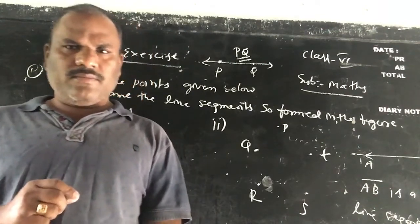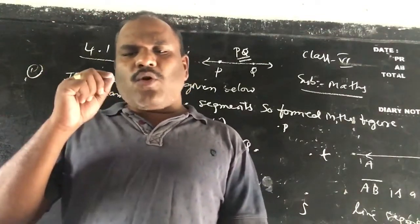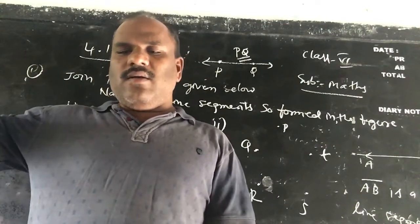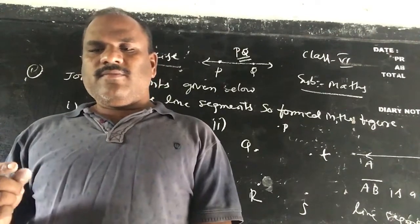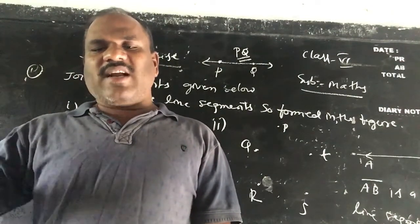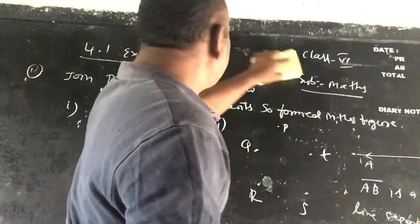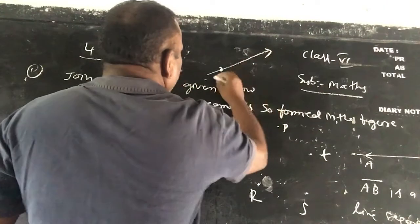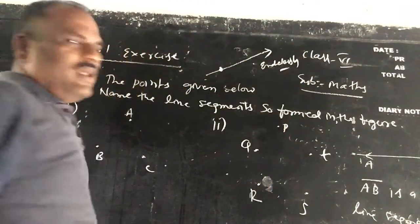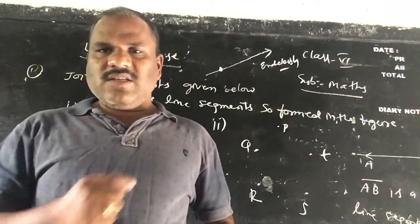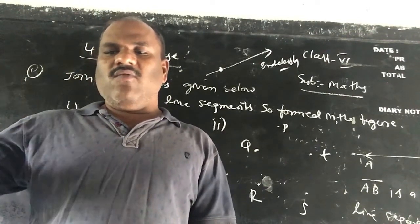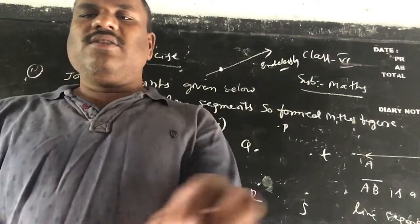Next topic is a ray. What is a ray? A ray is a portion of a line. It is extended on only one end and goes in one direction endlessly. For example, here is a ray — it starts at a point and goes in one direction endlessly. A ray is a portion of a line, starting at a point and going in one direction endlessly.